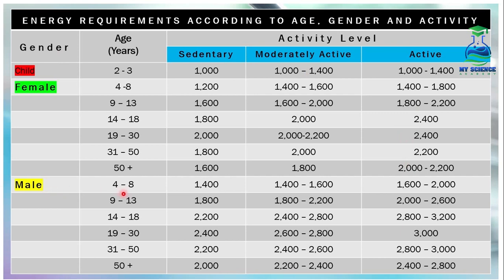Now we will see energy requirements for males with different age groups and different lifestyles. For males aged 4 to 8 years, sedentary requires 1400 kcal, moderately active is 1400 kcal and very active is 1600 kcal. For males aged 9 to 13 years, sedentary requires 1800 kcal, moderately active is 1800–2200 kcal and very active is 2000–2600 kcal.